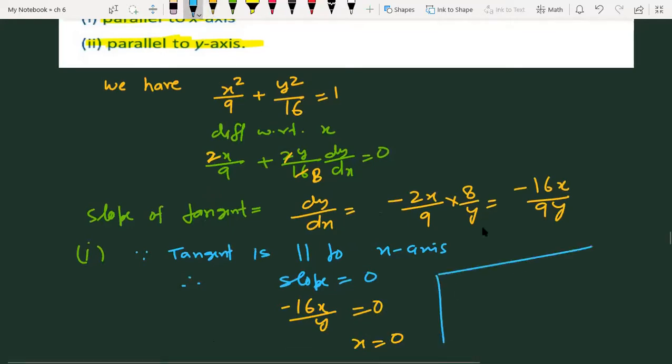Put x = 0 in the given equation. We get y = ±4. So the points are (0, +4) and (0, -4).